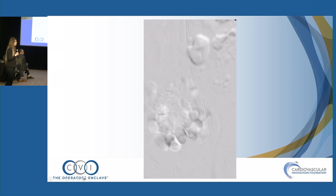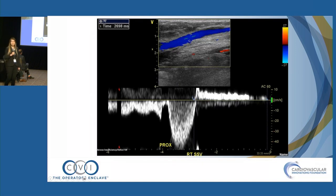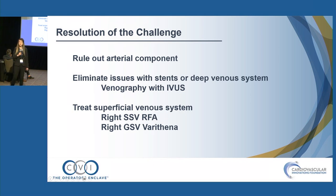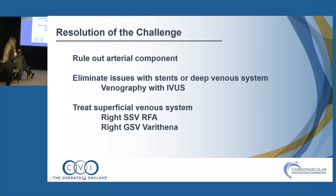There was no issue with the prior deep venous work, but no one had actually looked at her superficial venous system. A venous insufficiency study showed significant reflux at the GSV at the proximal calf as well as the SSV. To resolve this case, we had to rule out arterial, inflammatory vasculitis, and malignancy components. Once those were excluded and deep venous stent patency was confirmed with venography, IVUS, and CTV, it left the superficial system to be treated. She ultimately underwent radiofrequency ablation of the SSV, followed by staged procedures with varithena injections of perforators and the GSV at the ulcer location.